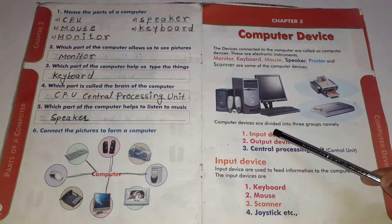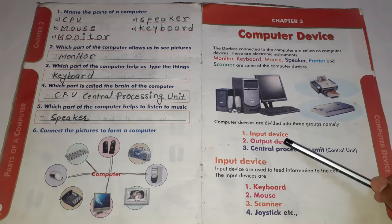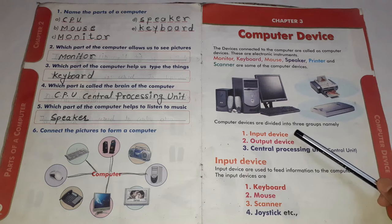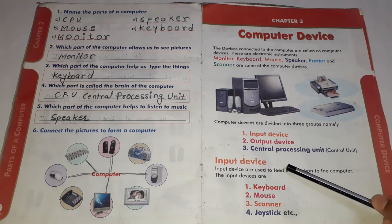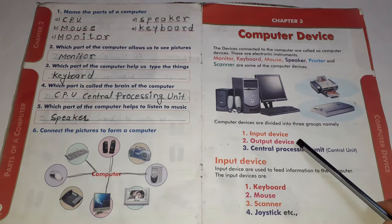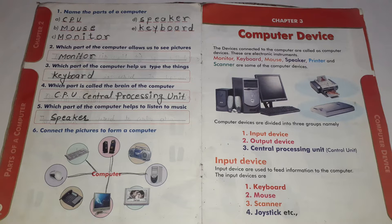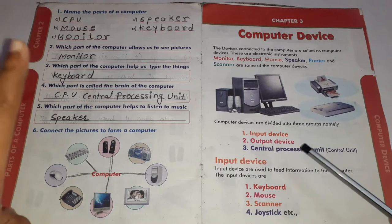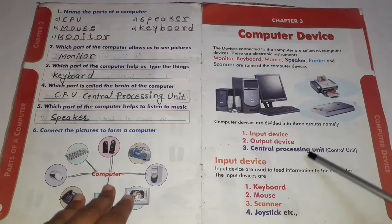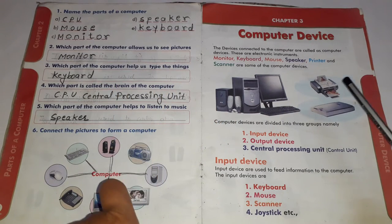Computer devices are divided into three groups. अब जो computer होता है उसे तीन parts में divide किया जाता है. First is called input device. Second is the output device. And third is the central processing unit. Processing unit means control unit. So all computer parts are divided into three forms — input, output, and central processing unit.